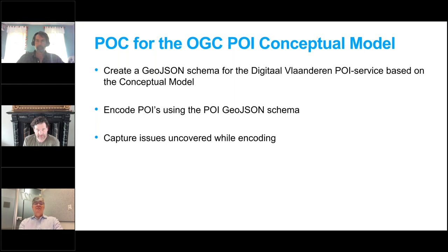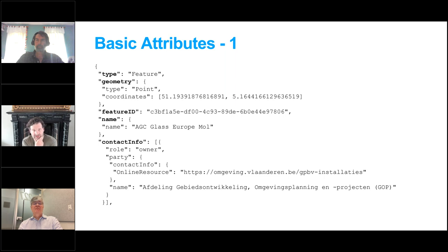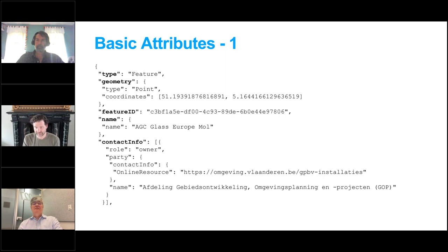We encoded the POIs using the schema and captured and solved the issues we came up with. We did this for our entire dataset and came up with not too many issues. Howard and Chuck already mentioned the difference between the basic attributes and payload attributes. For us, basic attributes — type, geometry, feature ID, name, contact info — we could easily map from our database. As a government, we also care about metadata, creating metadata records for every dataset we publish, and we need to make clear what the rights and licenses are connected to the datasets.